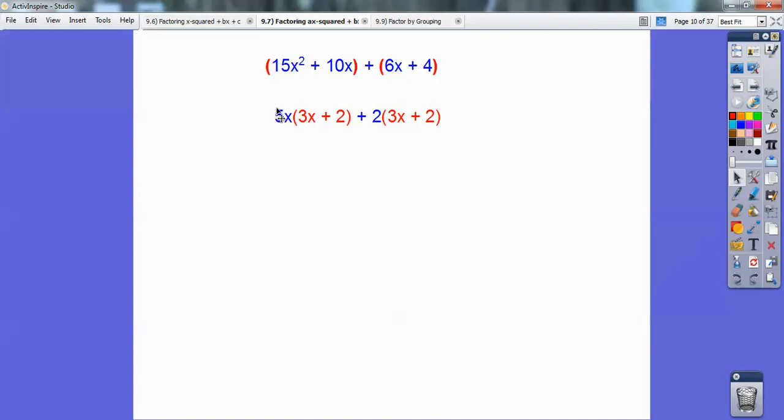Now remember, factoring is the opposite of multiplying. If I said multiply this 5x through, I get 15x². 5x times that is 10x. It would just get me right back up there. So factoring is the opposite. Now notice they both have a red 3x + 2.